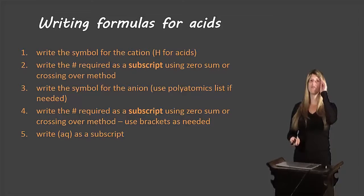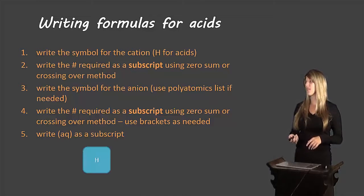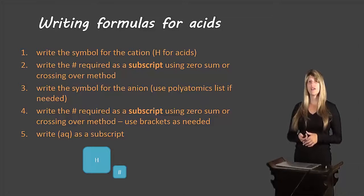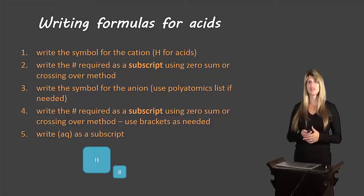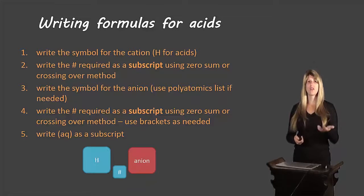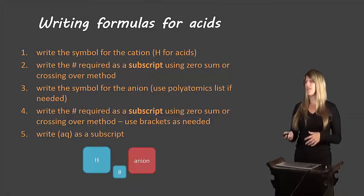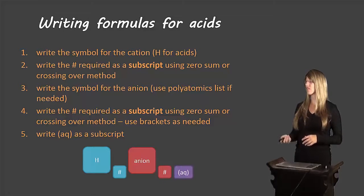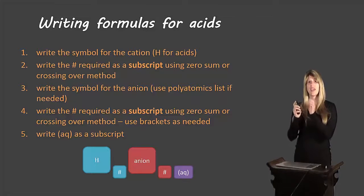Now let's look at how we write the formulas. We write H — since for acids H is always the cation — and then the number required as a subscript. We can use either the zero-sum or crossing-over method to figure out that subscript. Then we write the anion, which may be a polyatomic anion or just a regular non-metal, with the number required as a subscript. If it is a polyatomic anion, remember to use brackets before writing the subscript. Then write the state symbol '(aq).'